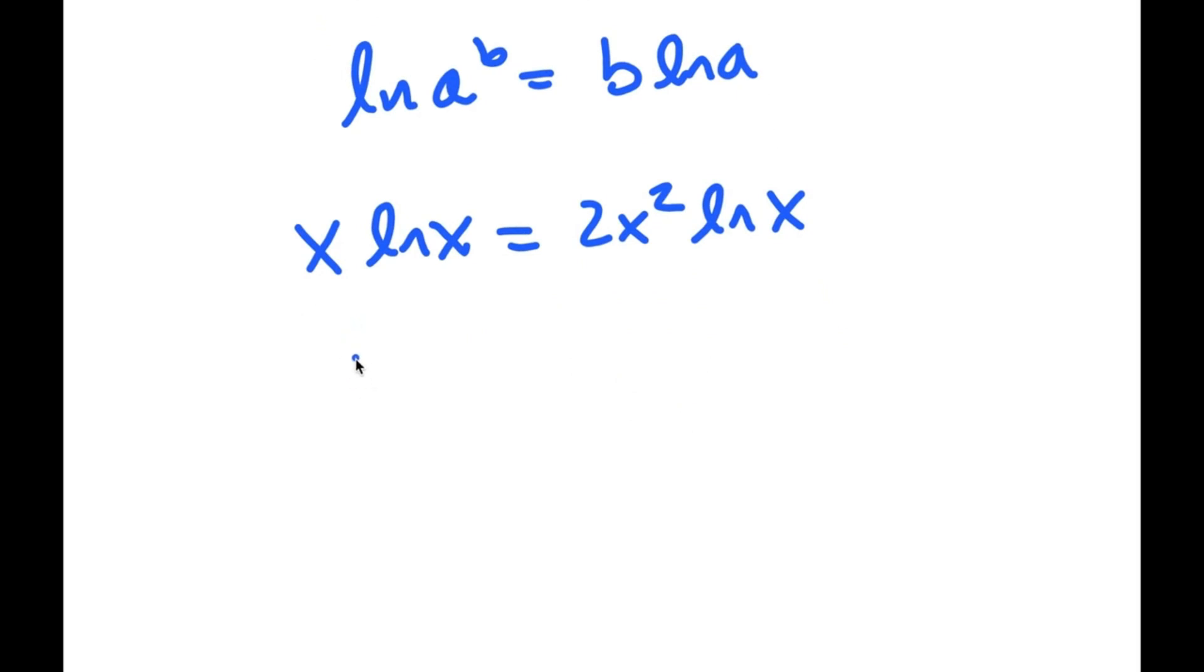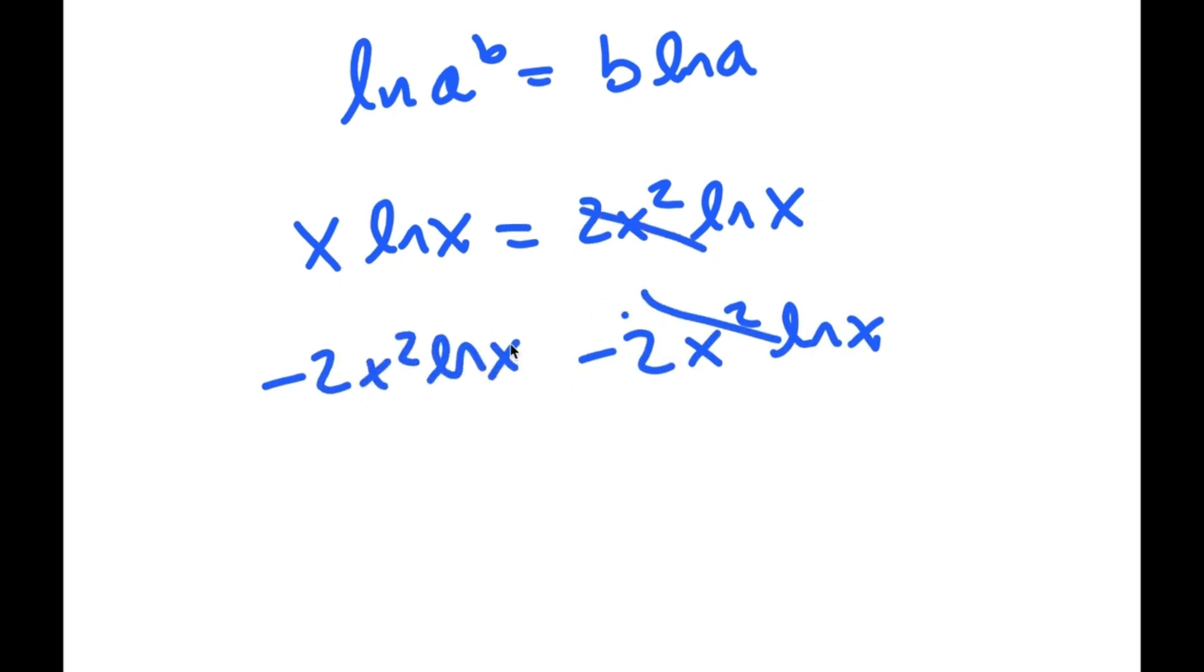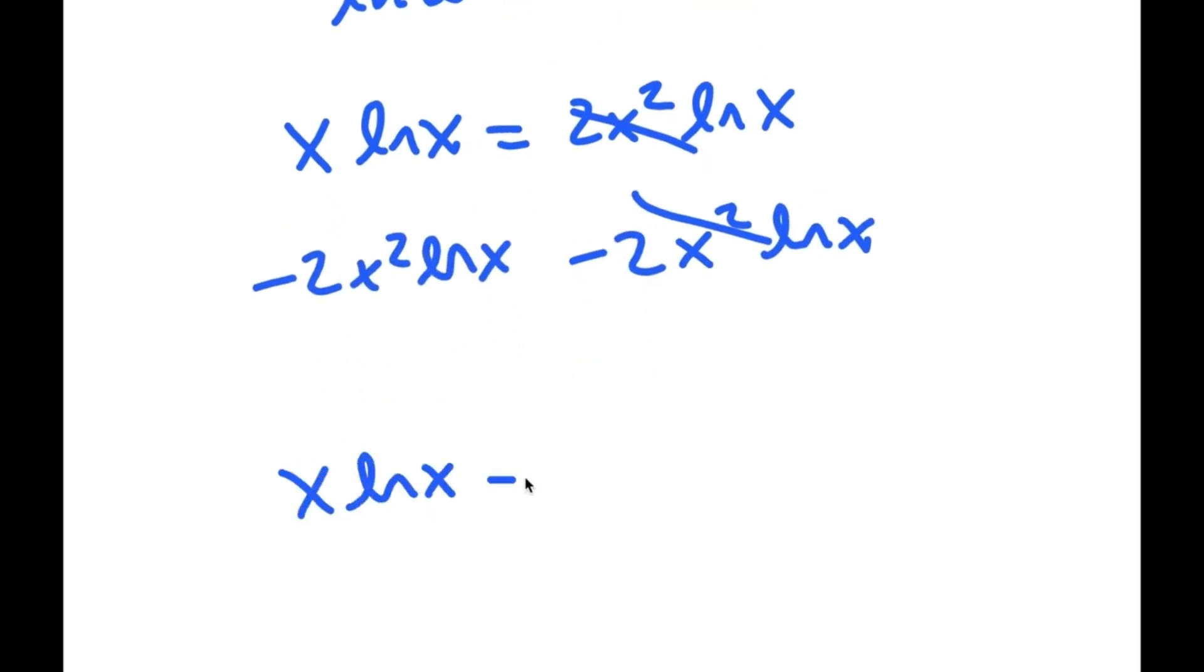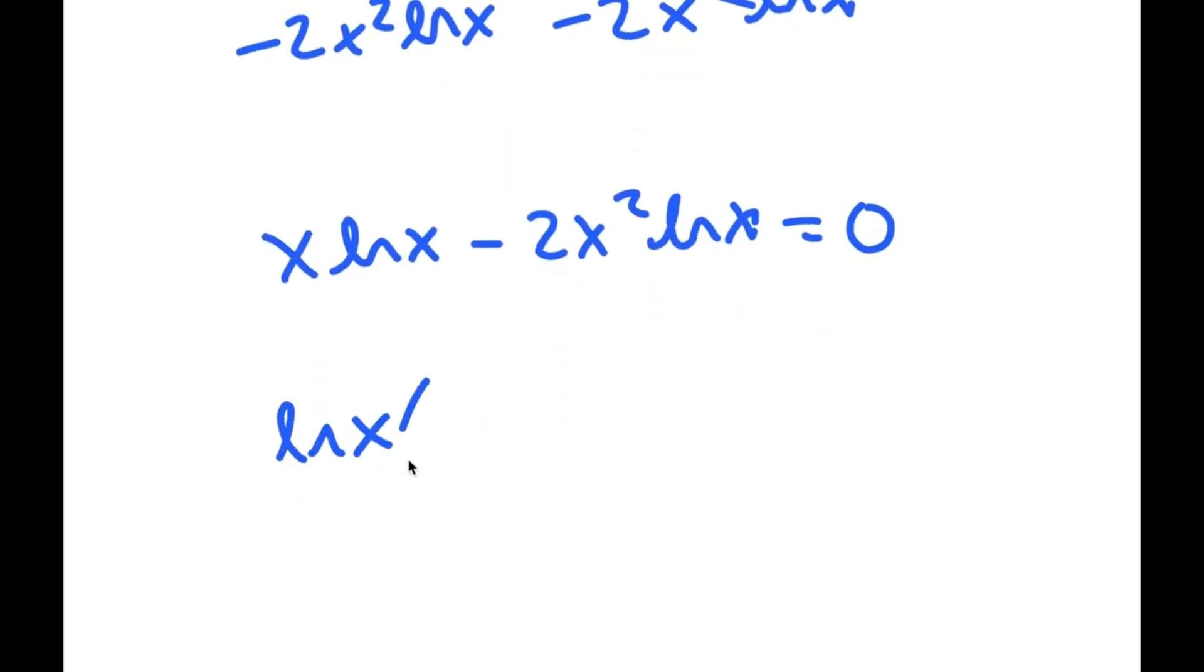Now, I'm going to subtract 2x squared times ln x on both sides. So I get x times ln x minus 2x squared times ln x is equal to 0. And now if I factor out ln x, I get ln x times x minus 2x squared is equal to 0.